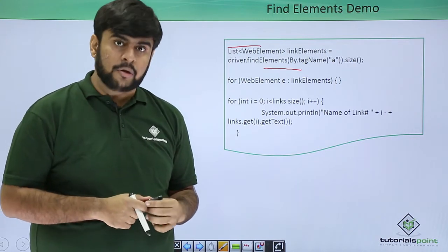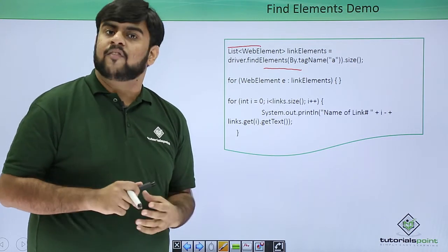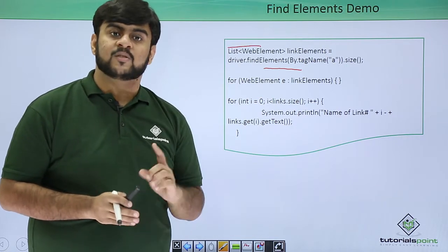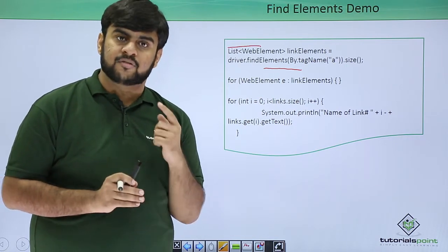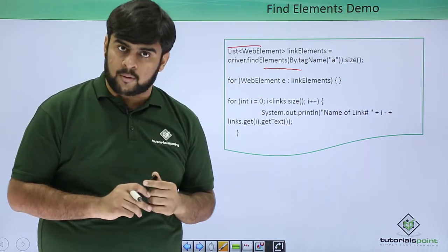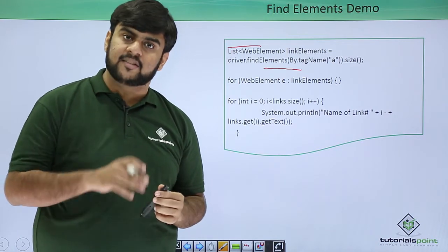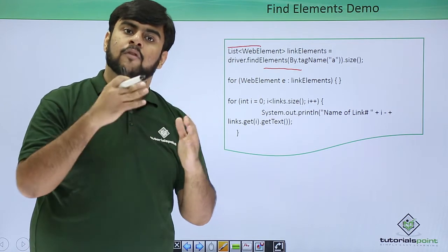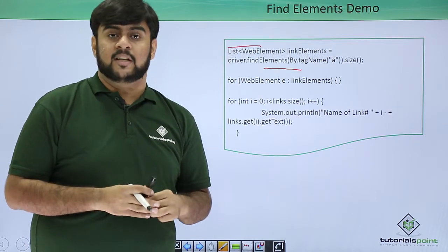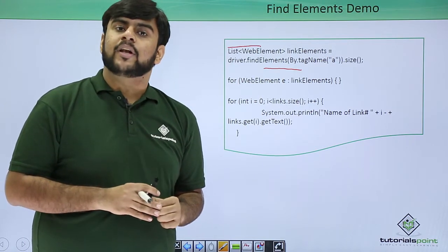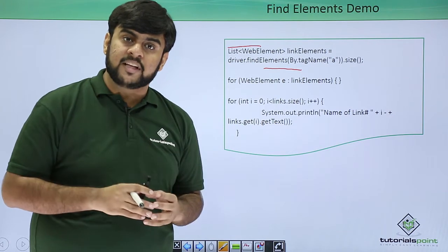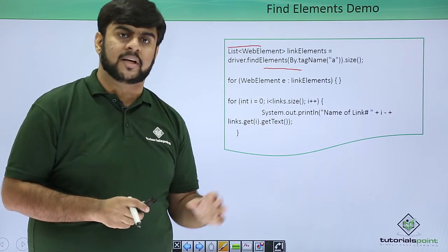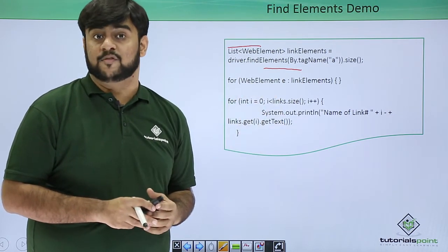If there are no elements then the list is empty. If there is one element the list returns only one element, and if there are more than one, the list returns the entire list of all the elements present on the page. Now let's quickly go to Eclipse and run this to check the working of the findElements function.